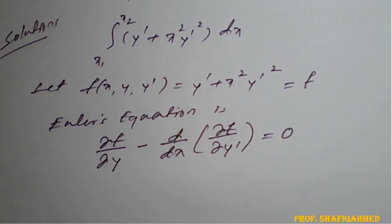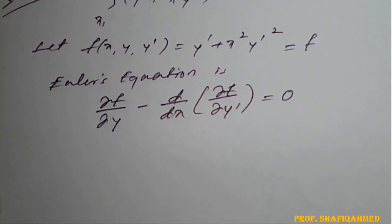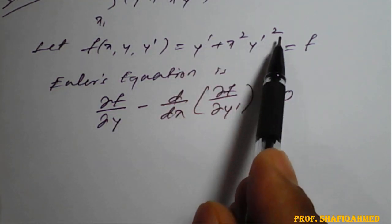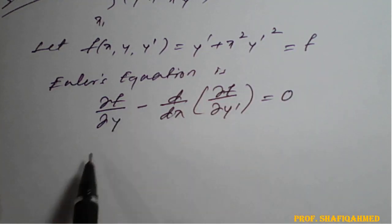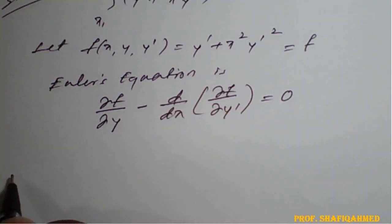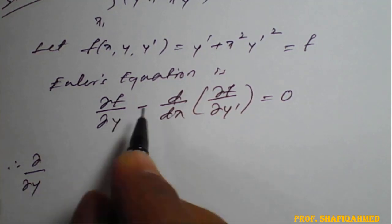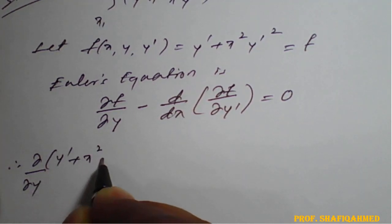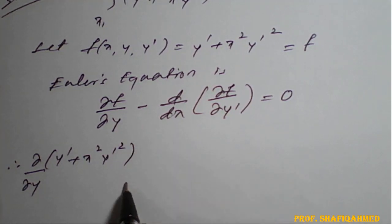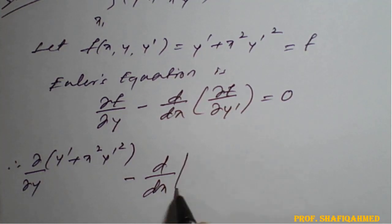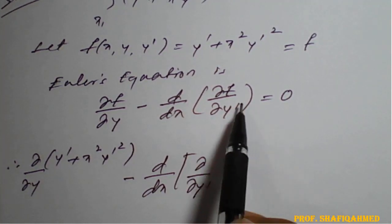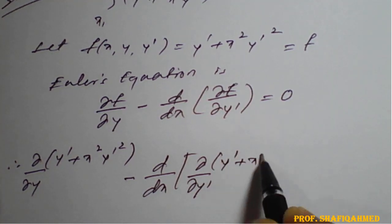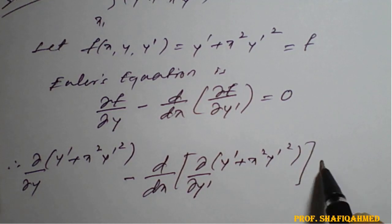We will check for what value the extremal holds — minimum or maximum. Applying Euler's equation with f = y' + x² y'², the equation becomes: ∂/∂y(y' + x² y'²) − d/dx[∂/∂y'(y' + x² y'²)] = 0.